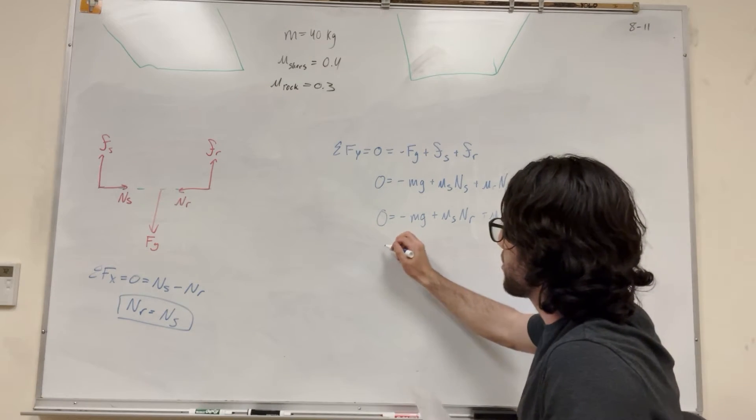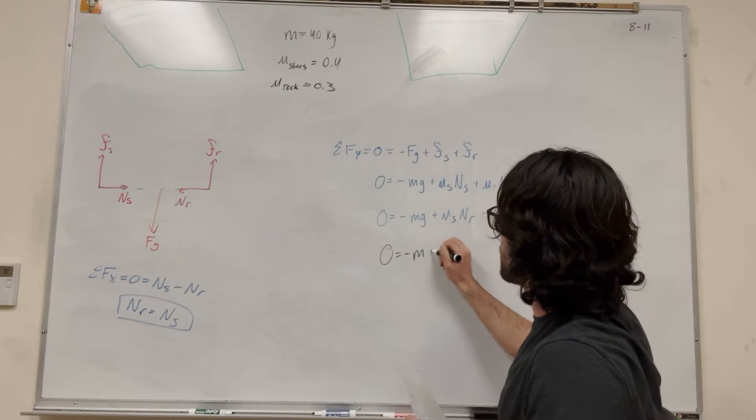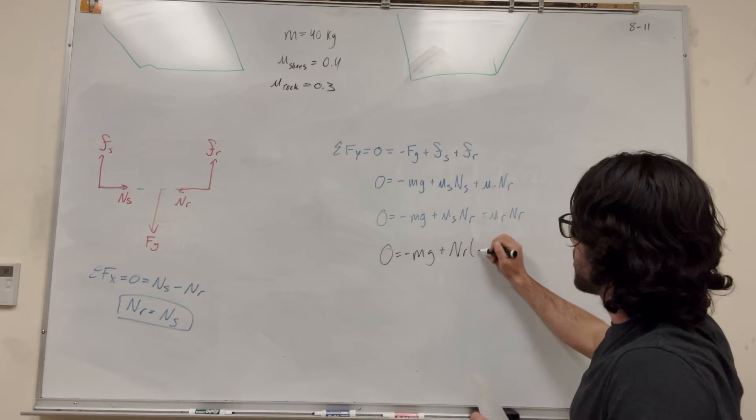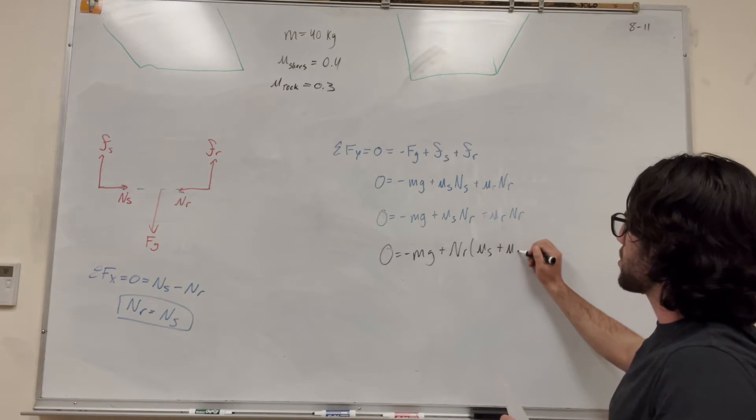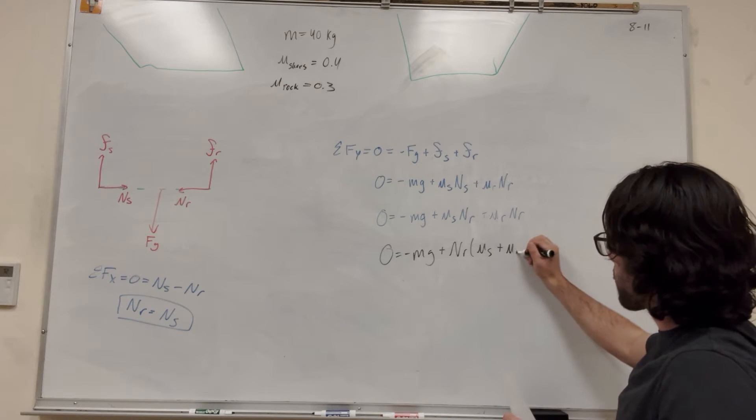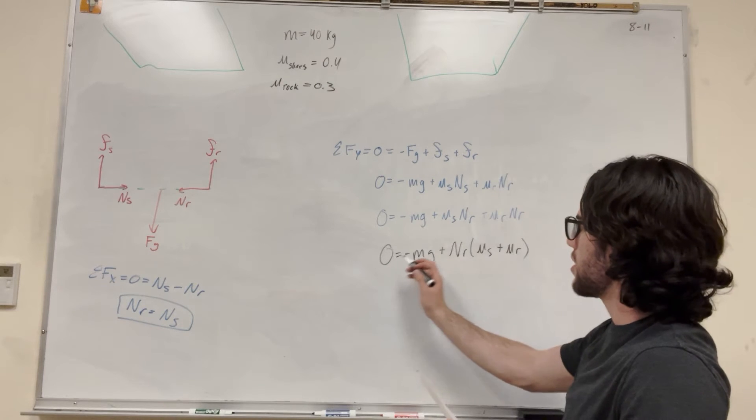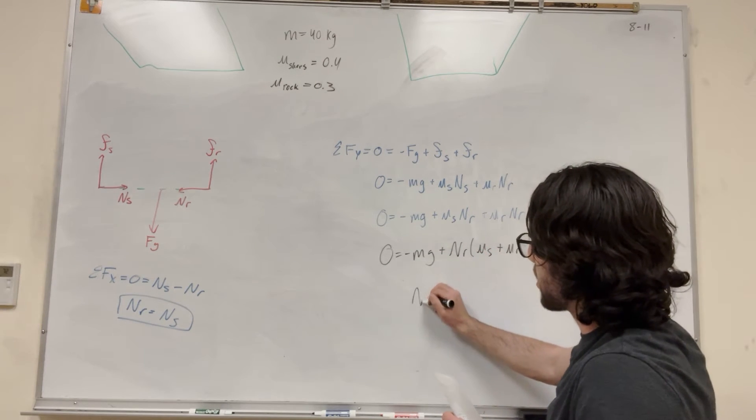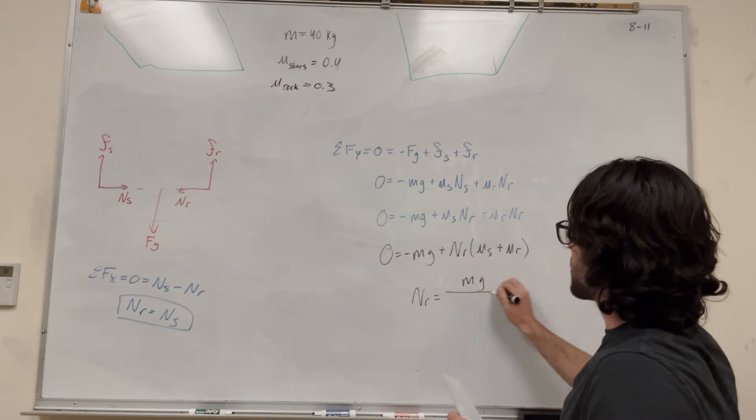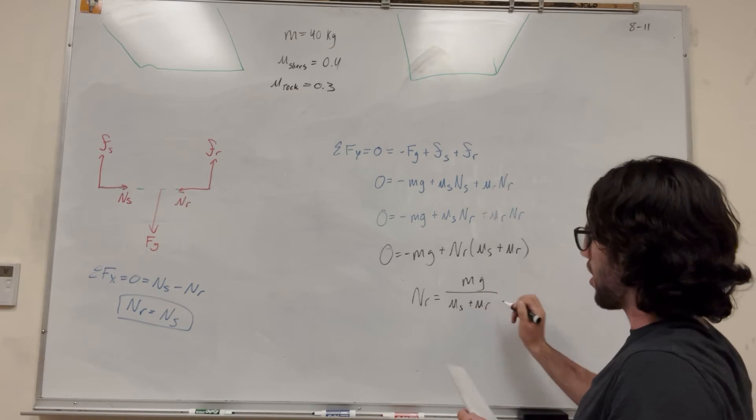So of course now we can factor out, switch colors. So we're factoring out the normal of the rock. So mu static plus, or mu of the shoes plus mu of the rock. These are different. And then all we have to do is move it over. So if we add mass gravity over and then divide by this, we're going to get that normal is equal to mass gravity divided by the coefficient of the shoes plus coefficient of the rock.